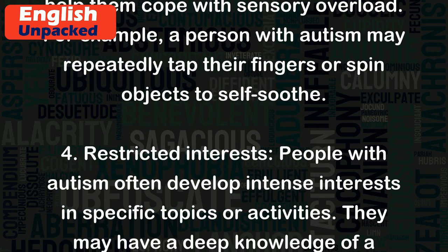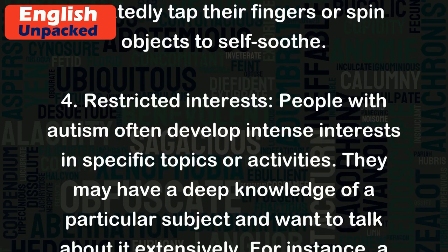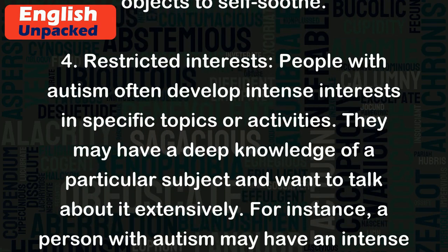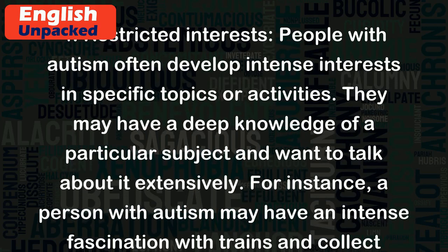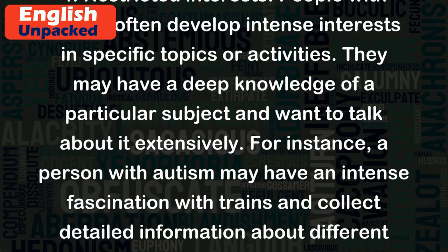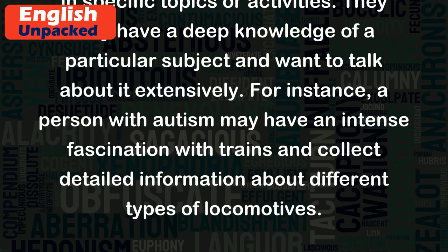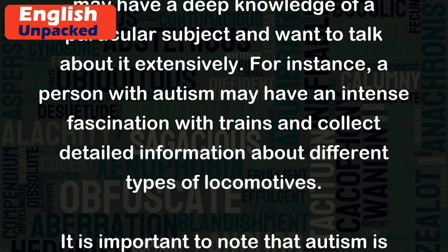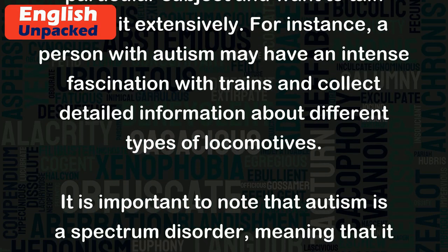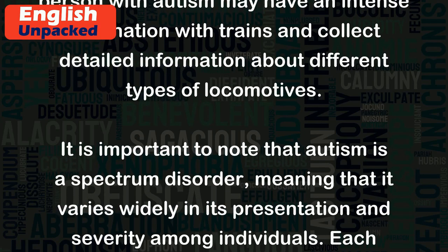4. Restricted Interests. People with autism often develop intense interests in specific topics or activities. They may have a deep knowledge of a particular subject and want to talk about it extensively. For instance, a person with autism may have an intense fascination with trains and collect detailed information about different types of locomotives.